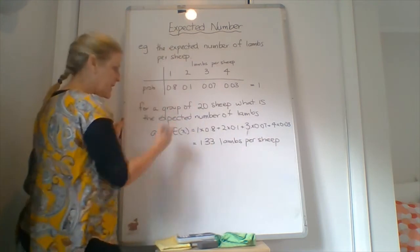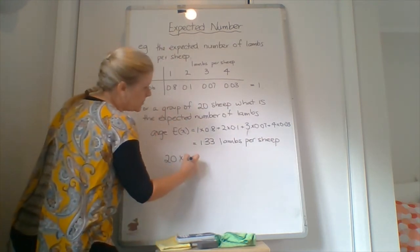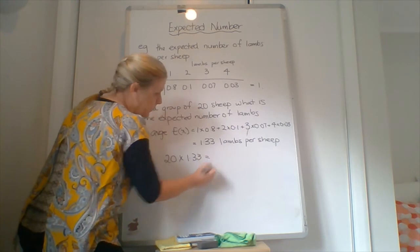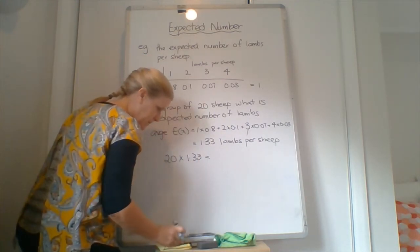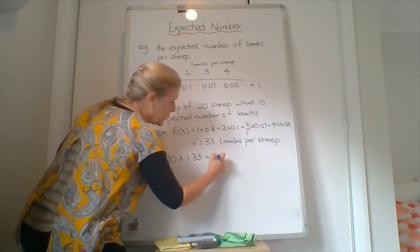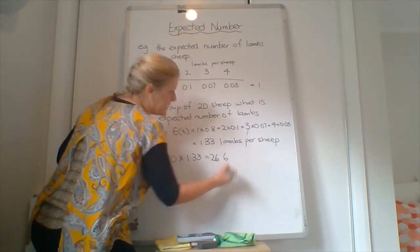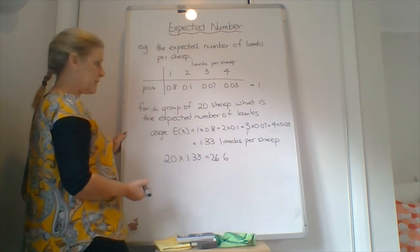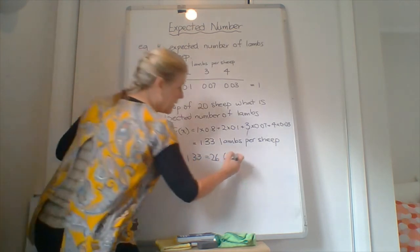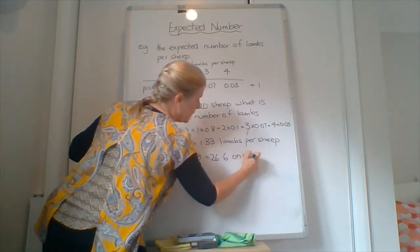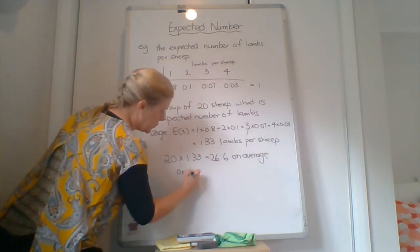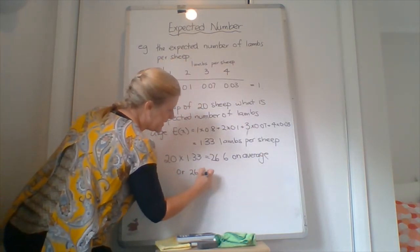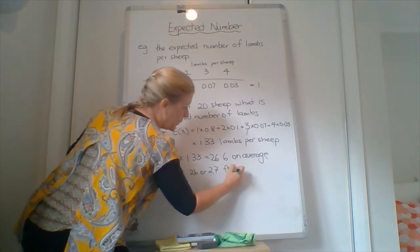So to find out for 20 sheep, we've got to do 20 times 1.33 equals 26.6 on average, or 26 or 27 from a group.